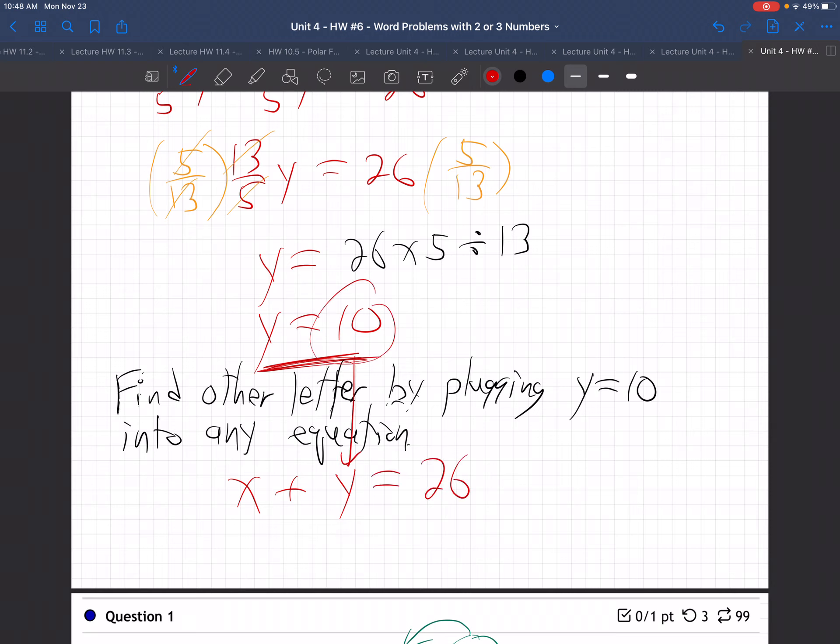x plus y is 26. Plug in the 10 right there for y. x plus 10 is 26. So then just subtract 10 from both sides. Boom. x is 16. So the two numbers are 10 and 16. We got the two numbers.